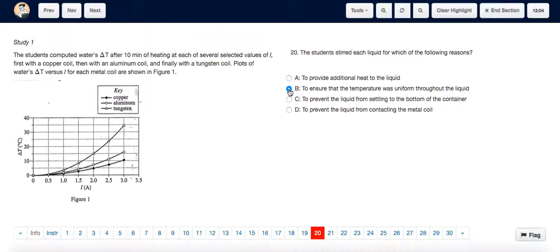And just to confirm, let's check C and D. Option C says to prevent the liquid from settling to the bottom of the container. However, stirring has no effect on whether the liquid settles to the bottom of the container or not. And option D says to prevent the liquid from contacting the metal coil, which once again stirring has no effect on. So the answer is B.